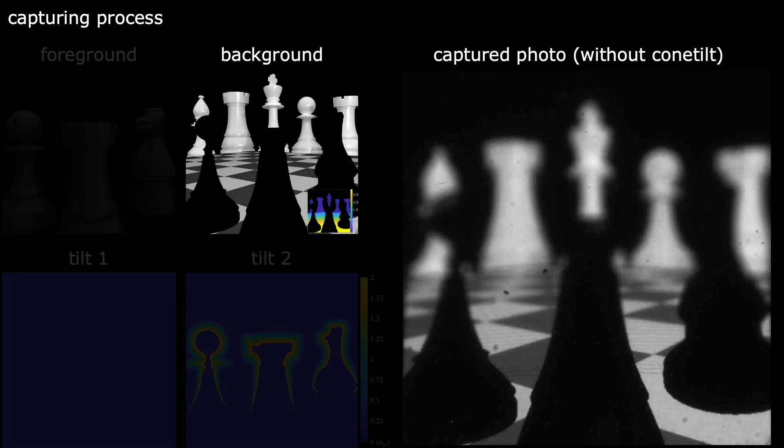The background contains the rest of the scene points, including the pixels that are directly occluded by the foreground, but still can be seen if we move our eye in the eye box. ConeTilt is used on the background to avoid light leaking through the foreground.